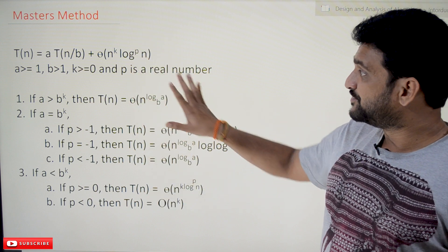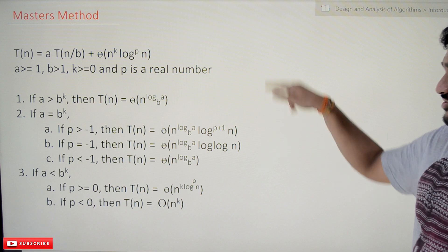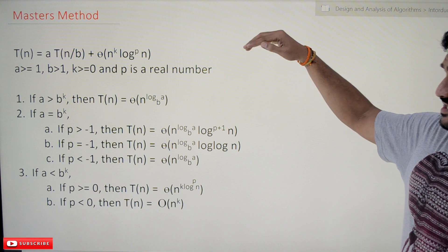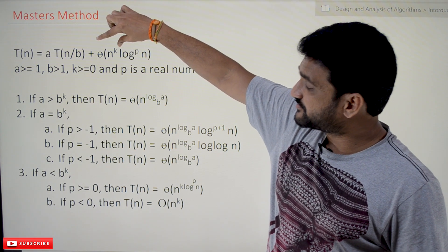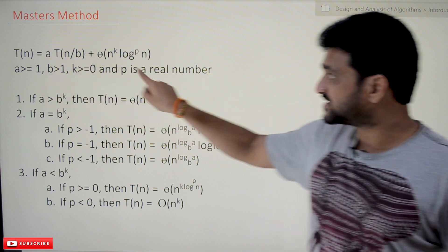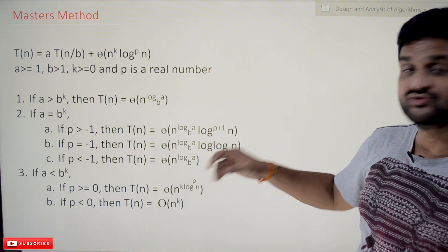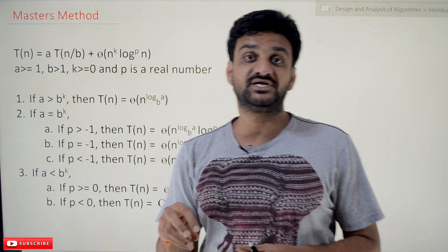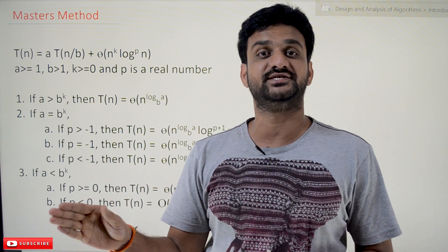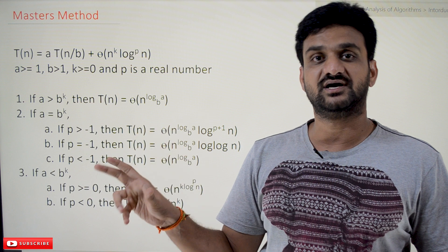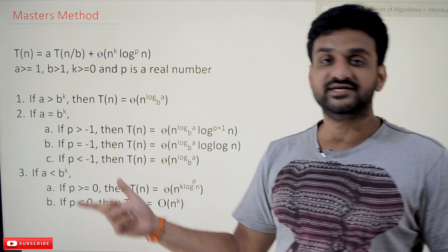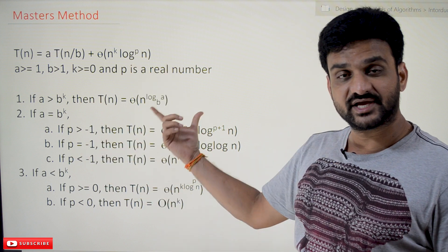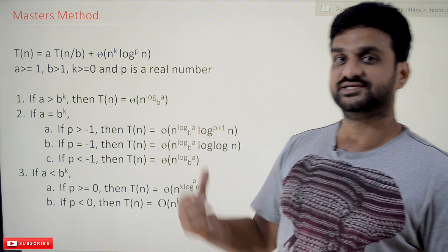This is a very straightforward method. If the equation is of a certain form and satisfies certain conditions, then by using this method you can get the efficiency of the algorithm directly. The Master's Method is not useful for all recurrence relations, but it can be used for certain kinds of recurrence relations if certain conditions are satisfied and the equation looks a certain way.